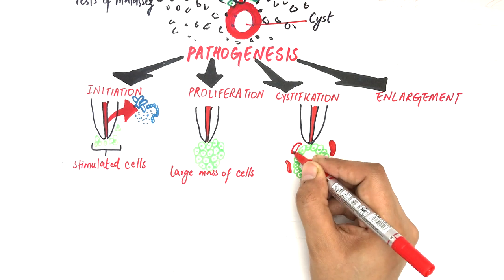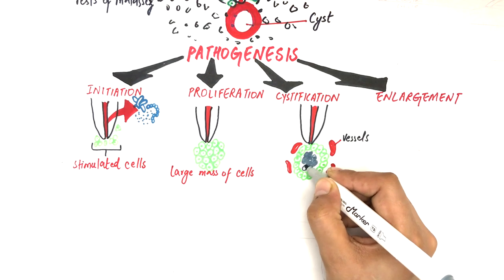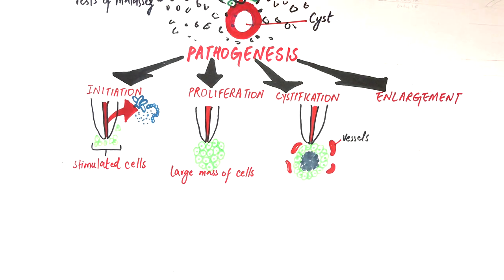As a result, the central cells of the epithelial mass undergo ischemic liquefactive necrosis while their peripheral cells survive. This eventually gives rise to the formation of a centrally placed cavity surrounded by a peripheral outline of epithelial cells.